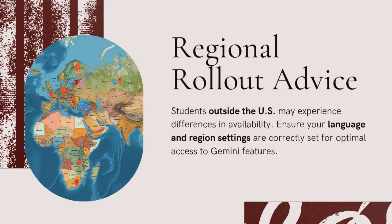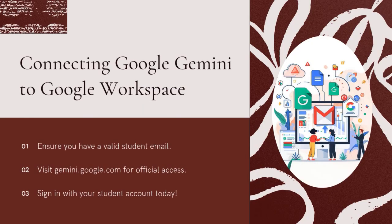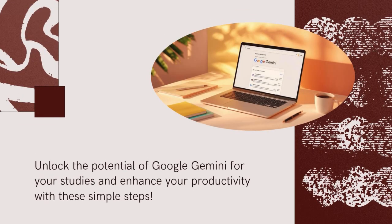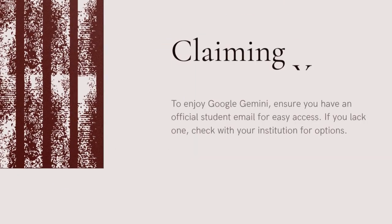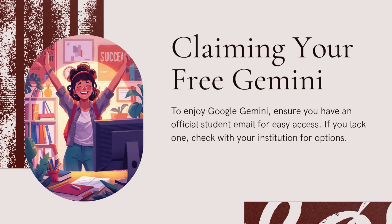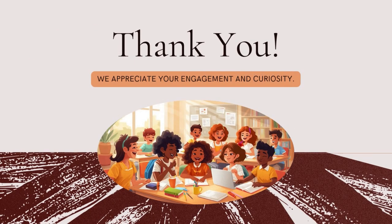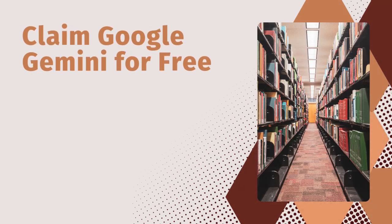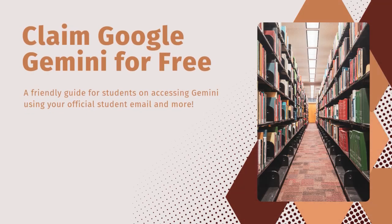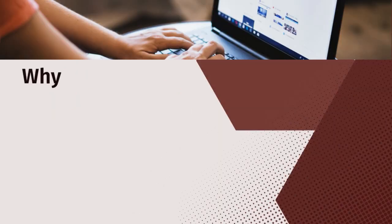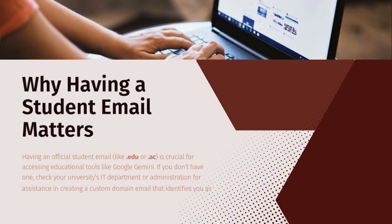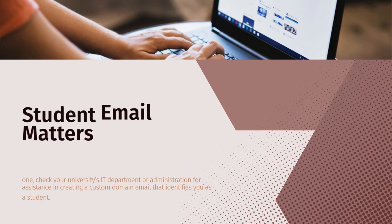Once you have that, here's what to do next. Go to the Gemini website — simply search 'Google Gemini' on Google and click the official link that takes you to gemini.google.com. Make sure it's the real Google site, not a third-party link, because you'll be signing in with your school credentials. Sign in using your student account. When you do this, Google automatically checks if your institution is part of the education program that supports Gemini access. If your school is already partnered with Google Workspace for Education, you'll instantly see that you have Gemini for Education or Gemini Advanced access at no cost, and you can start using it immediately inside Google Docs, Gmail, and other Workspace apps.